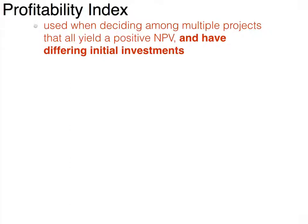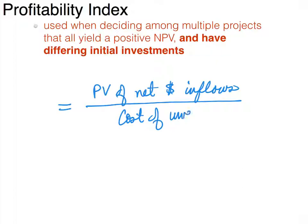Typically we would pick the investment with the highest net present value — and that's true if the investments cost the same thing. But what if the investments have differing initial costs and all have positive net present values? We want to use something called the profitability index. The formula is: take the present value of the net cash inflows and divide that by the cost of the investment.